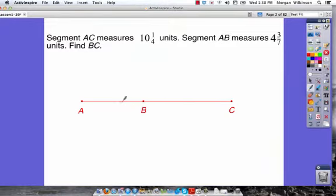Now, this problem, segment AC measures 10 1⁄4 units, so A to C, that's all the way across A to C. That's 10 1⁄4 units. Segment AB, that measures 4 3⁄7, so A to B, 4 3⁄7.